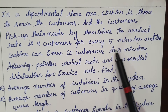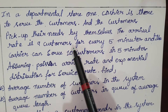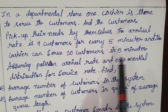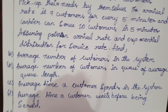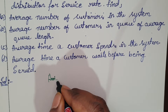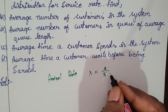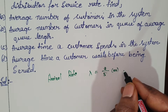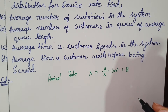The cashier has to serve 10 customers in every 5 minutes. The arrival rate is 9 customers per 5 minutes, and the service rate is 10 customers per 5 minutes. So first, you write the arrival rate: lambda is equal to 9 by 5, or you can write 1.8.